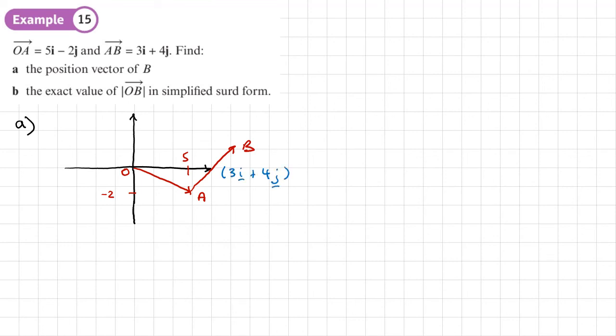And that vector is 3I plus 4J. 3 across and 4 up. Now, this question is asking us to find this vector, the position vector of B, basically OB. If we find OB, we've found the position of B. Now, we can just use the fact that if we use different routes to get to the same place, it's the same vector. So to get from O to B, and I can see this clearly on the diagram, it's the same as going from O to A, which I know, and then from A to B, which I know.